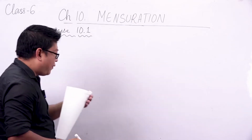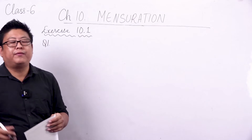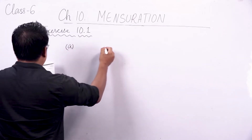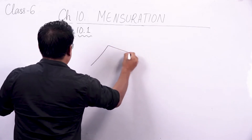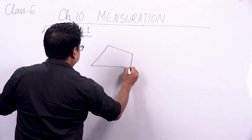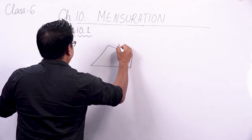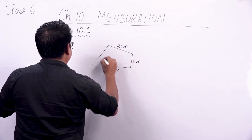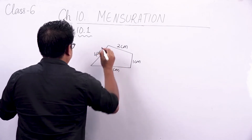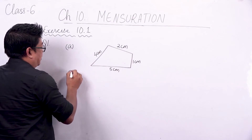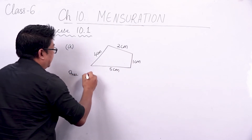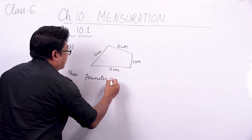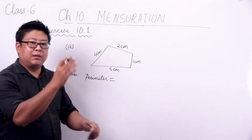The first question is: find the perimeter of each of the following figures. Let's look at the first figure, A. We have been given a figure and they have given us sides: 2 cm, 1 cm, 5 cm, and 4 cm. They have asked us to find the perimeter. Perimeter simply means the total boundary.